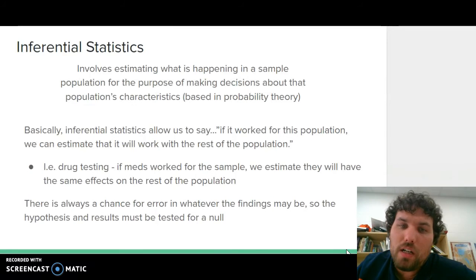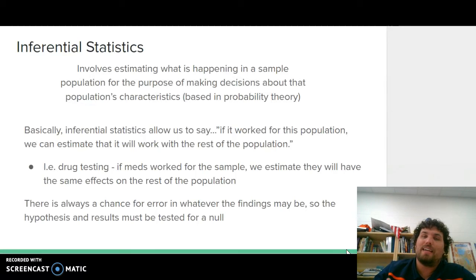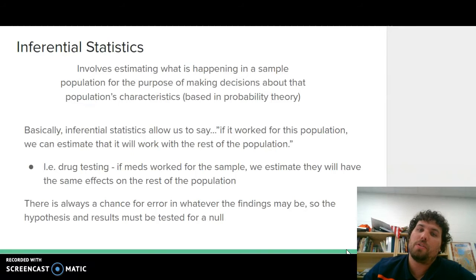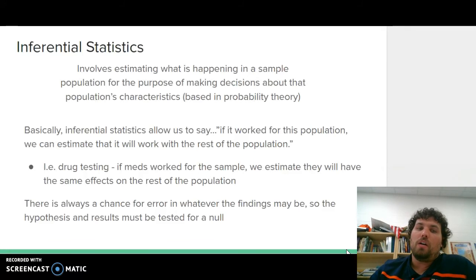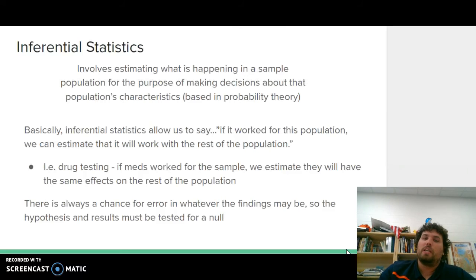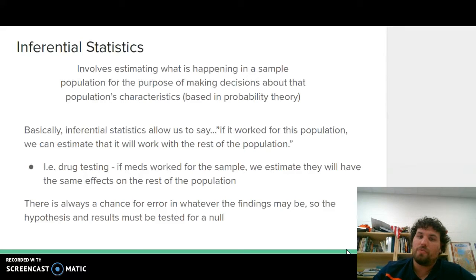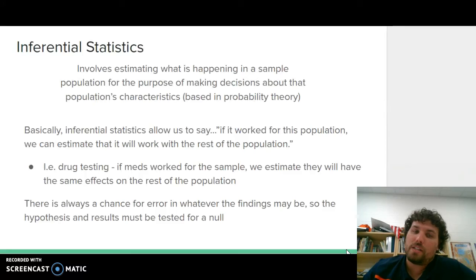With inferential statistics, the importance is that they allow us to make inferences about what these numbers mean. It involves estimating what is happening in a sample population for the purpose of making decisions about that population's characteristics, and it's based in probability theory. Basically, inferential statistics allow us to say if it worked for this population, we can estimate it will work for the rest of the population. For example, drug testing — if meds worked for one sample, we estimate they will have the same effect for the rest of the population and extrapolate those findings to others.